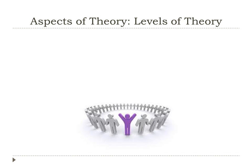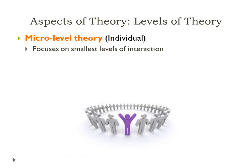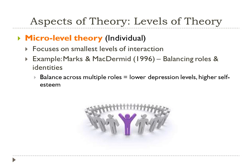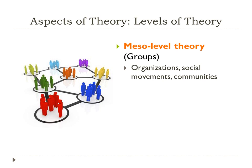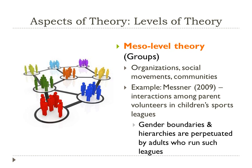Theories can take on different levels. Micro-level theories are at the individual level, focusing on the smallest level of interactions between human beings. For example, Marx and McDermid's 1996 study on balancing roles and identities found that lower depression levels were associated with higher levels of self-esteem. The next level is meso-level theory, or group theory, where you look at organizations, social movements, or communities. For example, Messner's 2009 study of parent volunteers in children's sports leagues found that gender boundaries and hierarchies were perpetuated by adults who run such leagues.